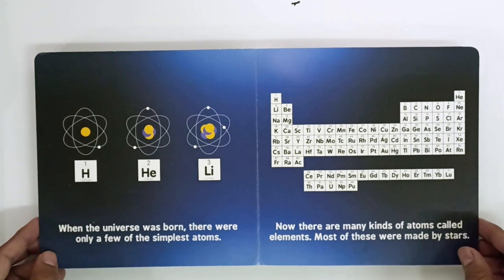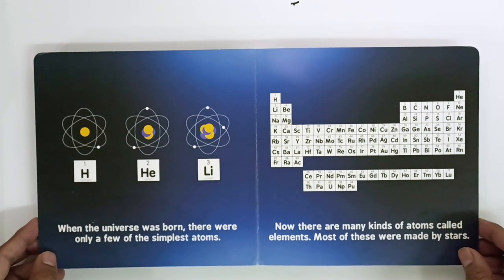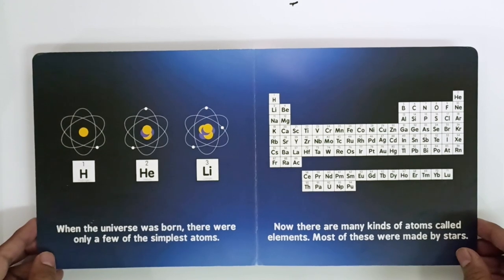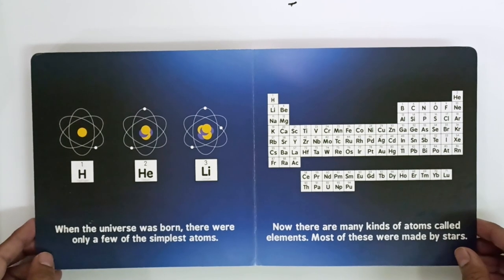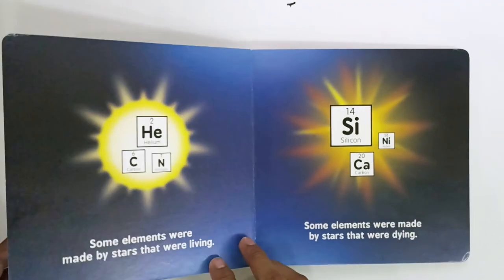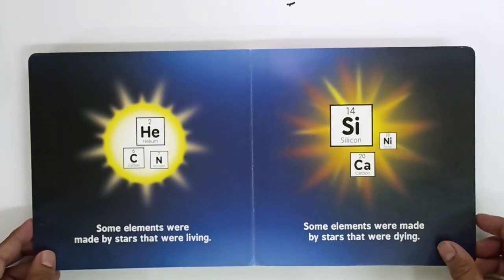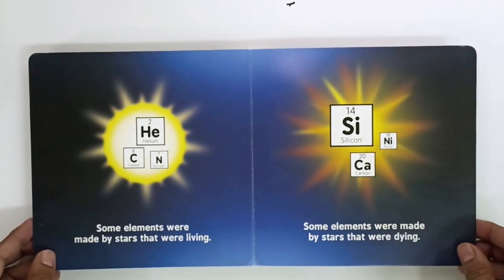When the universe was born, there were only a few of the simplest atoms. Now there are many kinds of atoms called elements. Most of these were made by stars. Some elements were made by stars that were living, some elements were made by stars that were dying.